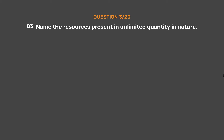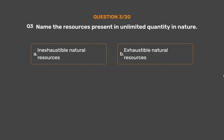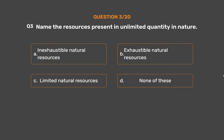Question number 3: Name the resources present in unlimited quantity in nature. Option A: Inexhaustible natural resources. Option B: Exhaustible natural resources. Option C: Limited natural resources. Option D: None of these.